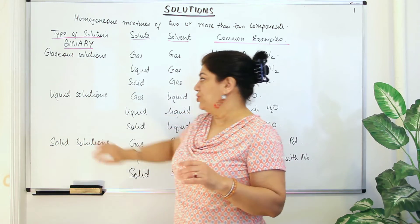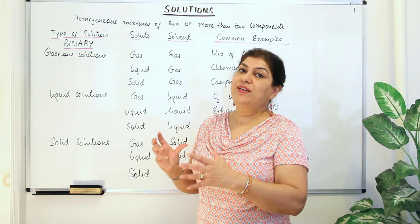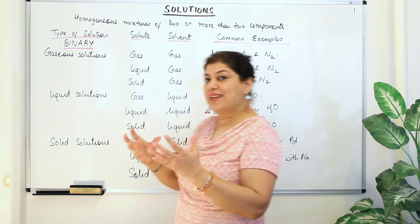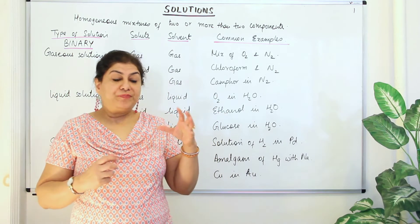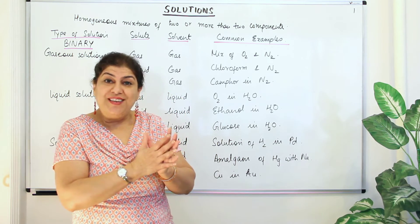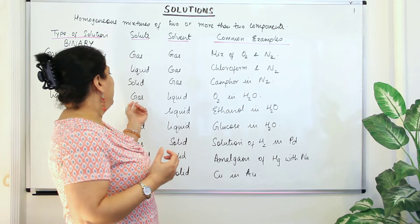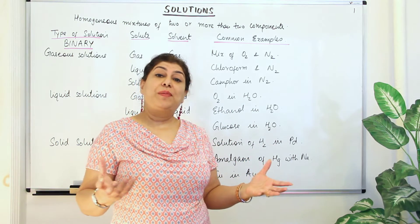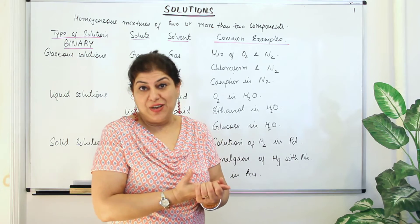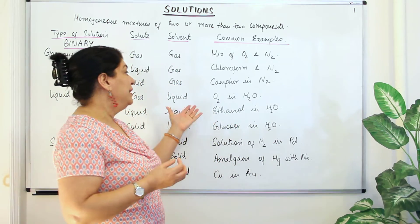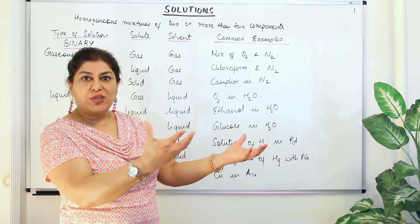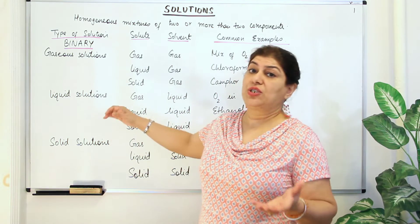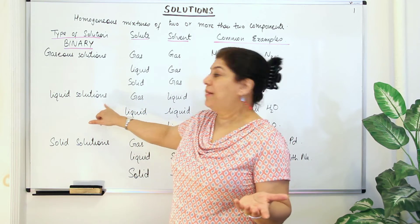The second main category is liquid solutions, where the solvent is a liquid. The first type is gas in liquid. Fizzy drinks like Coke and sodas contain carbon dioxide dissolved in water — that is a gas-in-liquid solution. Oxygen dissolved in water is another example: aquatic plants breathe using the oxygen dissolved in water, and plants also release carbon dioxide dissolved in water.